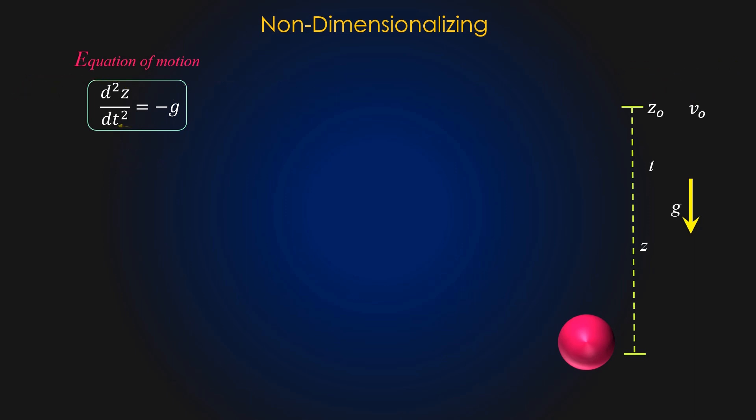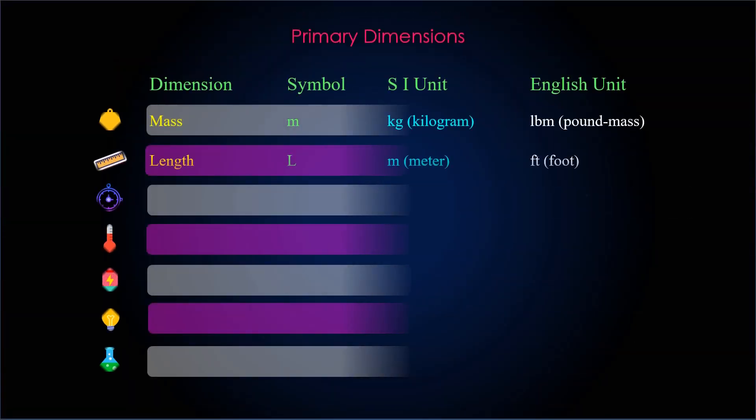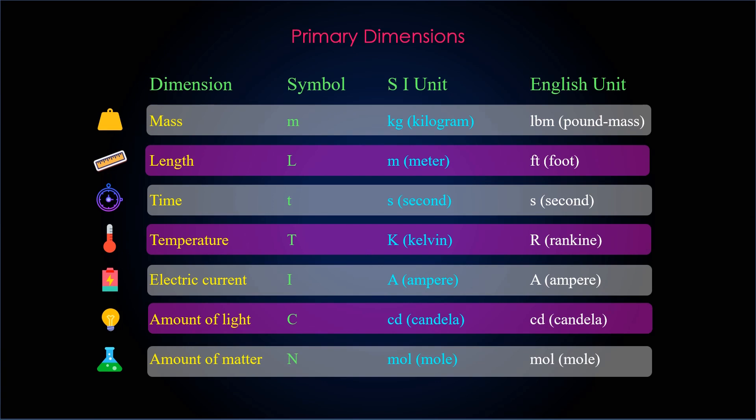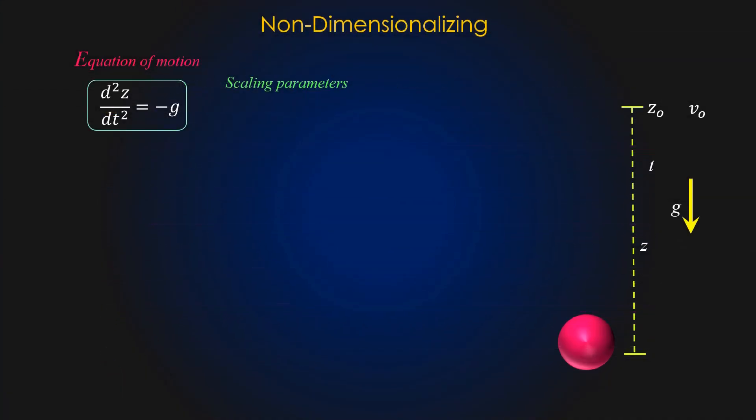To non-dimensionalize the equation, we need to select scaling parameters based on the primary dimensions contained in the original equation. There are seven primary dimensions. Let's write the primary dimensions for these dimensional variables and constants. We can see that in the present problem there are only two primary dimensions, length and time, and thus we select only two scaling parameters.